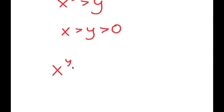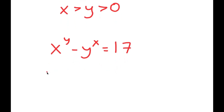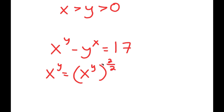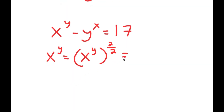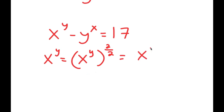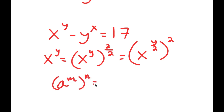Now I'm going to rewrite my equation here: x to the power of y minus y to the power of x is equal to 17. I can rewrite x to the power of y as x to the power of y times 2 over 2, because 2 over 2 is the same thing as 1. This I can rewrite as x to the power of y over 2, to the power of 2, because if I have something in the form a to the power of m to the power of n, this is the same thing as a to the power of m times n.